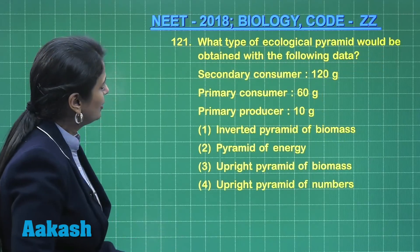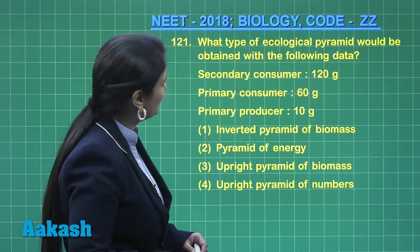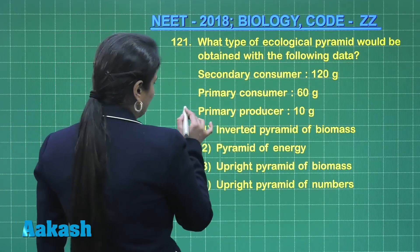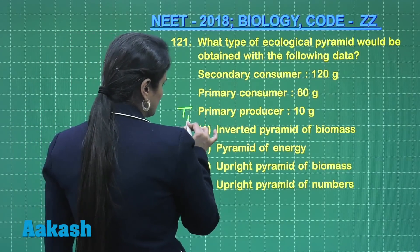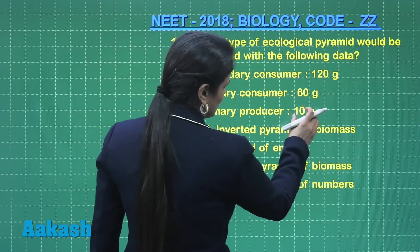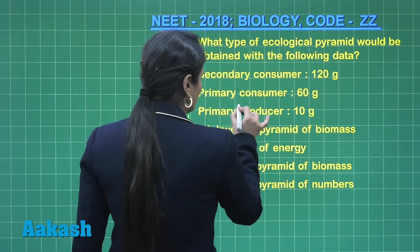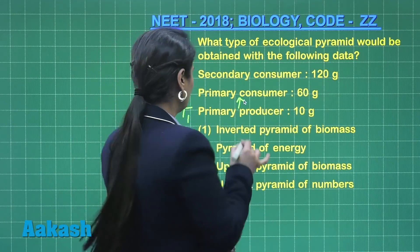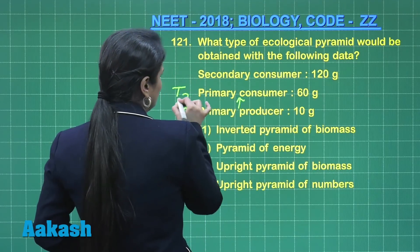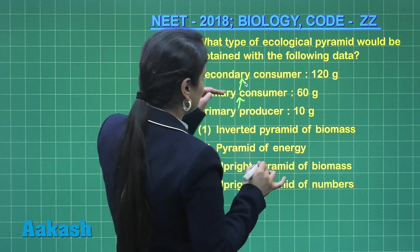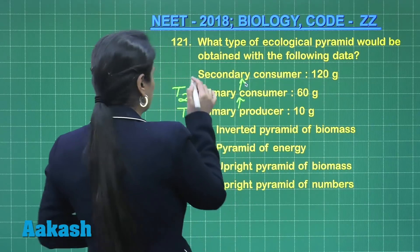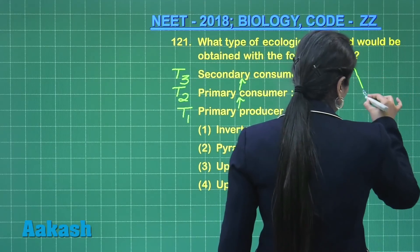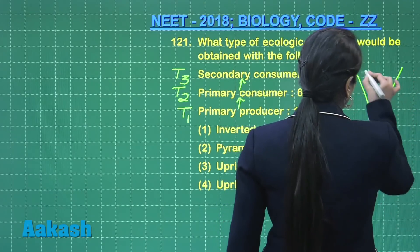Moving to question 121: which type of ecological pyramid would be obtained with the following data? The first trophic level is formed by primary producers (plants) — biomass is 10 grams, minimum here. Primary producers are fed upon by primary consumers — biomass is relatively more, forming the second trophic level. Secondary consumers, which eat primary consumers, have biomass at T3 that is maximum.